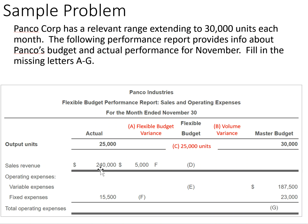Sales revenue actual was 240 and we had a $5,000 favorable variance. If that's favorable, it means the flexible budget was lower at 235, because our revenues were higher than what we had budgeted for — that gives us a favorable variance.